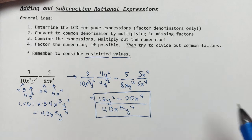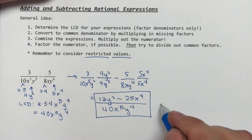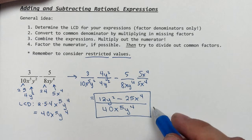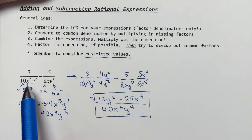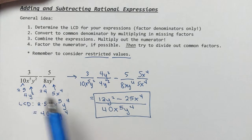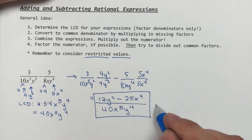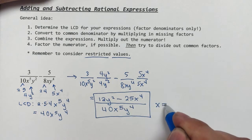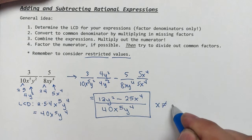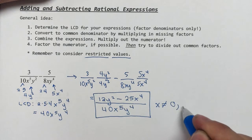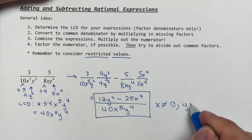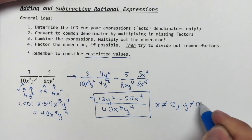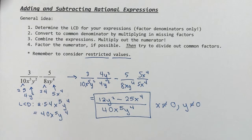I'll make note of my restrictions. Since there were powers of x and y in the denominator with no interesting binomial factors, x cannot be 0 and y cannot be 0. Those are my restrictions. That's one example.